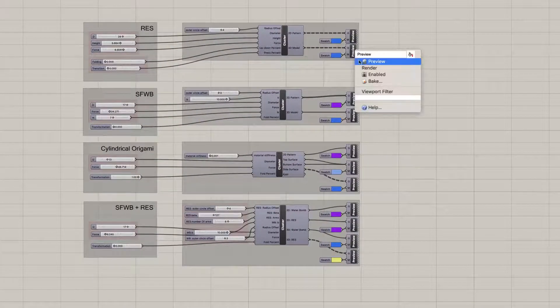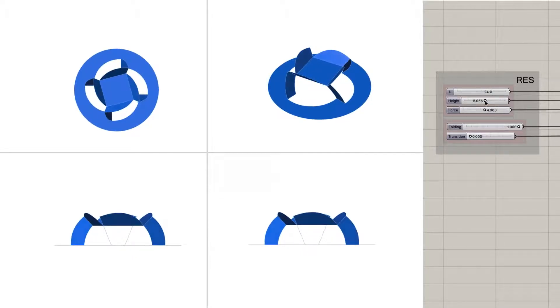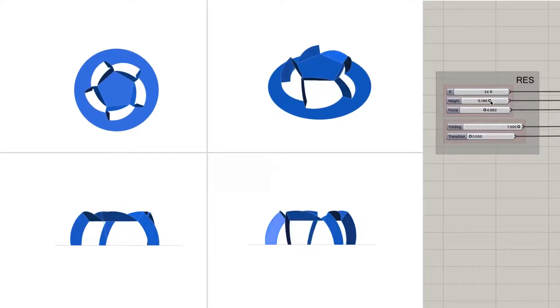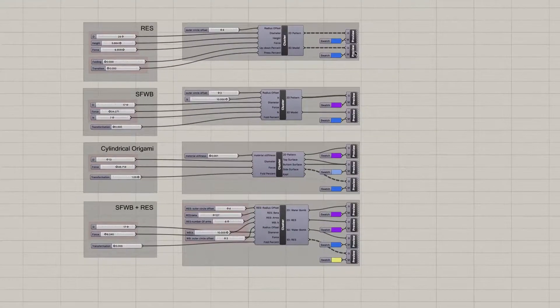For each primitive structure selection, user can input the form factor variables of the button, like diameter, keypress, traveling distance, and the software will calculate the maximum reaction force. Likewise, users can also input the desired maximum reaction force, and the software will generate the corresponding geometric parameters.